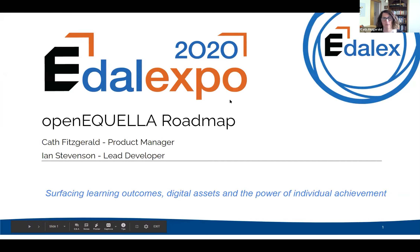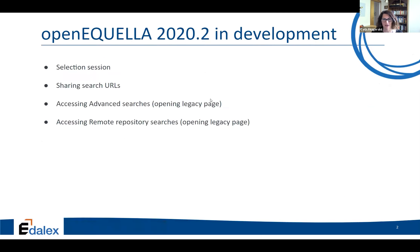Ian and I are going to talk about the Open Aquila Roadmap, but before I move on to that, I was remiss in my earlier presentation and left out a couple of slides. I showed you what we've done so far for 2020.2, but I forgot to tell you what we're currently working on and what will also be included when we release.